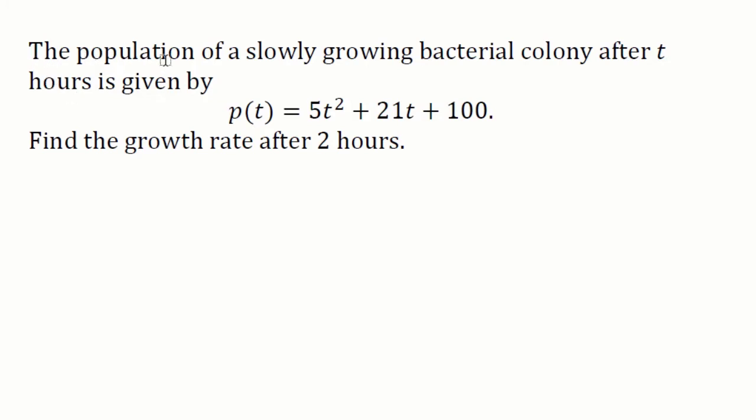The population of a slowly growing bacterial colony after t hours is given by - here we have our population growth modeling function. The model says p, which is the population for bacteria, and scientists use the letter p for population. This population size at time t equals 5t² plus 21t plus 100.